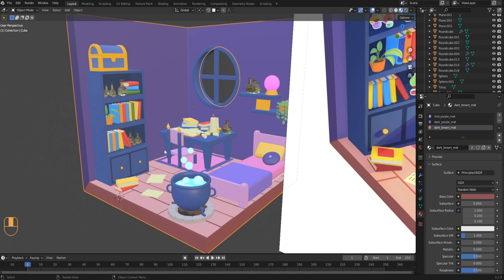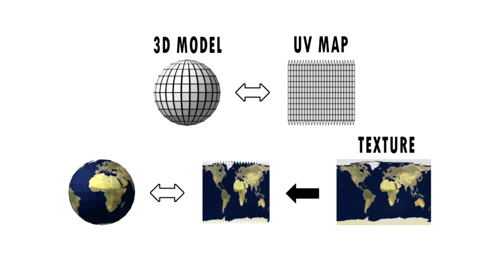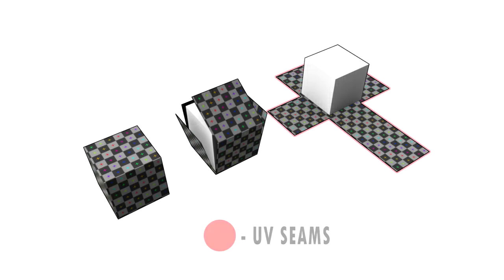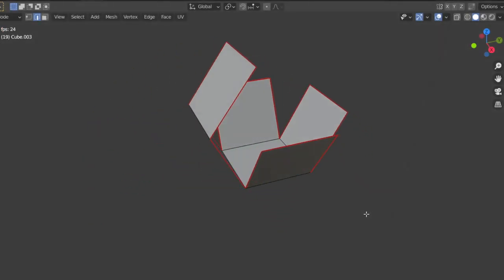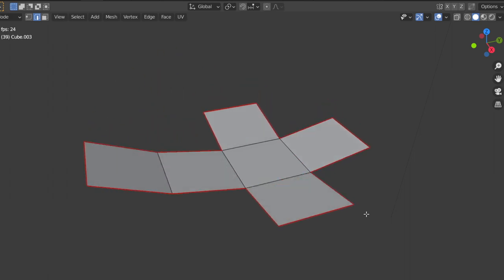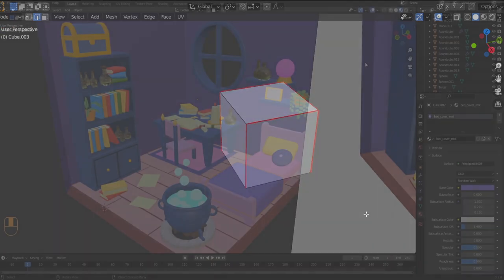Next we're going to make some UVs for the objects that need to be painted on. A UV map is the flat representation of the surface of a 3D model, used to apply 2D textures to a 3D object — the process of creating one is called UV unwrapping. To unwrap a model we create UV seams, which tell Blender that faces on either side of a seam should not stick together in the UV map. In short, UVs flatten your model into 2D islands and allow you to apply 2D textures to your 3D object.